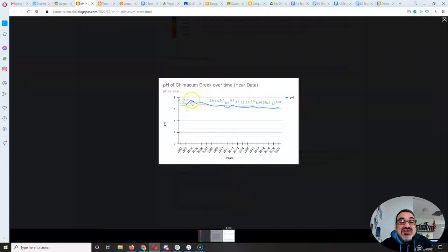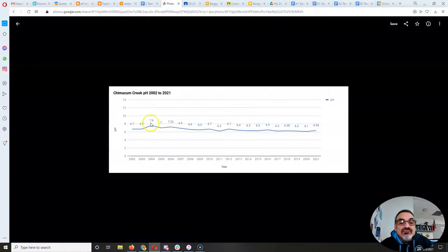And then going back to 2002, the last 19 years of our creek, we only had a few years: 7.6, 7, and 7.23 in 2004, 5, and 6, where clearly there had to be a mistake.